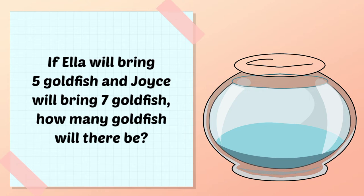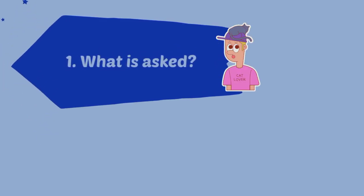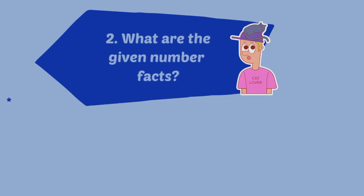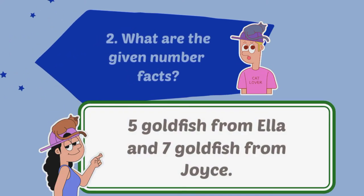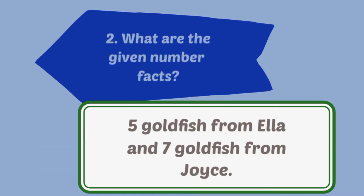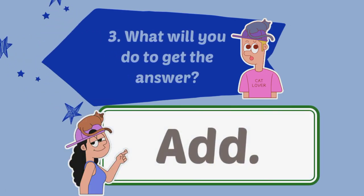If Ella will bring five goldfish and Joy seven goldfish, how many goldfish will there be? Let's do the steps in solving word problems. What is asked? The number of goldfish to be placed in the aquarium. What are the given number facts? Five goldfish from Ella and seven goldfish from Joy. What will you do to get the answer? We shall add.